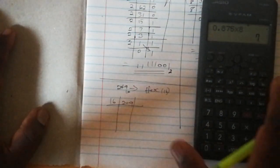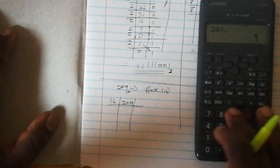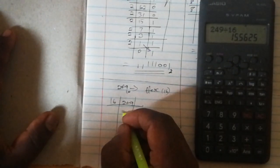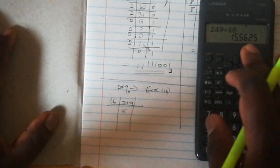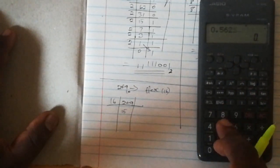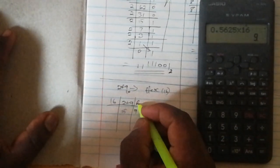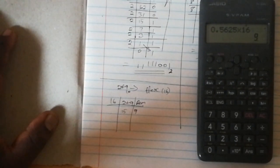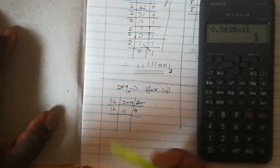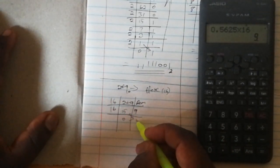I'll punch in my calculator 249 divide by 16 and I get 15.5625. So I'll take this 0.5625 times 16 and get that my remainder is 9. Divide again, and 16 being larger than 15, the quotient is 0 and the remainder is my 15 here.